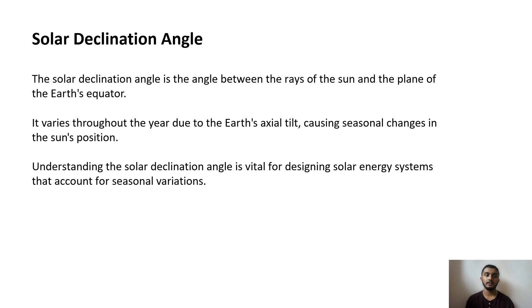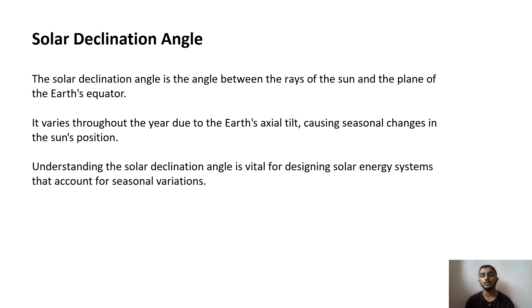The solar declination angle is the angle between the rays of the sun and the plane of Earth's equator. It varies throughout the year due to the Earth's axial tilt, causing seasonal changes in the sun's position. Understanding the solar declination angle is vital for designing solar energy systems that account for seasonal variations.